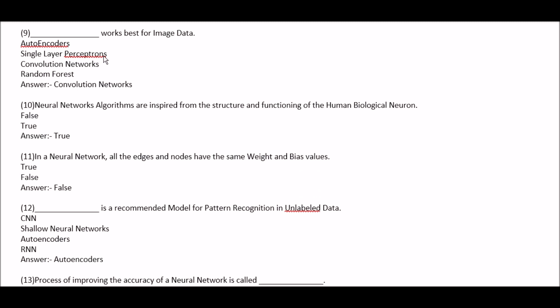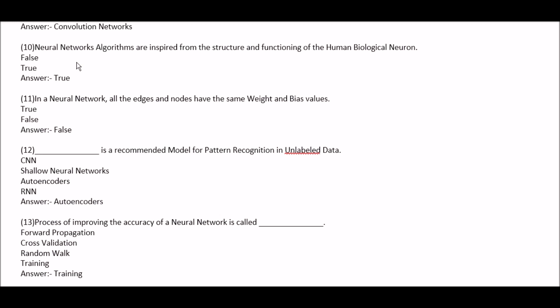Blank space works best for image data. Option A: autoencoders. Option B: single layer perceptrons. Option C: convolution networks. Option D: phantom forest. Right answer is option C, convolution networks. Next question: neural network algorithms are inspired from the structure and functioning of the human biological neuron — true or false? This is true.